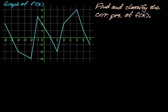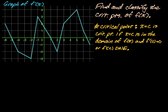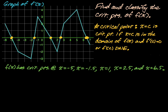Given the same graph of f prime, find and classify the critical points of f of x. A critical point is a point in the domain of f at which f prime is zero or undefined. Since f prime is defined everywhere on this graph, I'm just looking for the zeros. So f of x has critical points at x equals negative 5, negative 1.5, 1, 2.5, and 6.5.